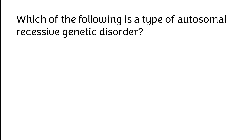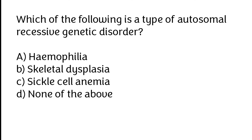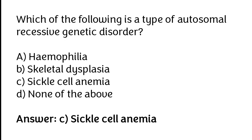Which of the following is a type of autosomal recessive genetic disorder? Hemophilia, skeletal dysplasia, sickle cell anemia, none of these. The correct answer is option C. Sickle cell anemia is a type of autosomal recessive genetic disorder.